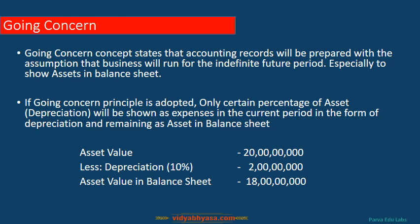The Going Concern Concept states that accounting records are prepared with the assumption that the business will run for an indefinite future period. This is especially important for showing assets in the balance sheet. Normally, when we start a business, we do not plan to close it in six months. Because of the going concern assumption, when we make an expenditure whose life is more than one year, we treat it as an asset — because we assume the business will continue year after year; otherwise all expenditures would be treated as expenses in the same period.